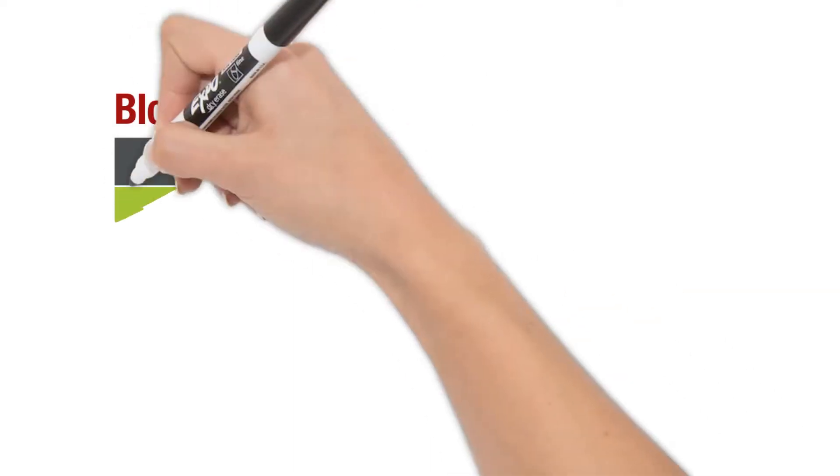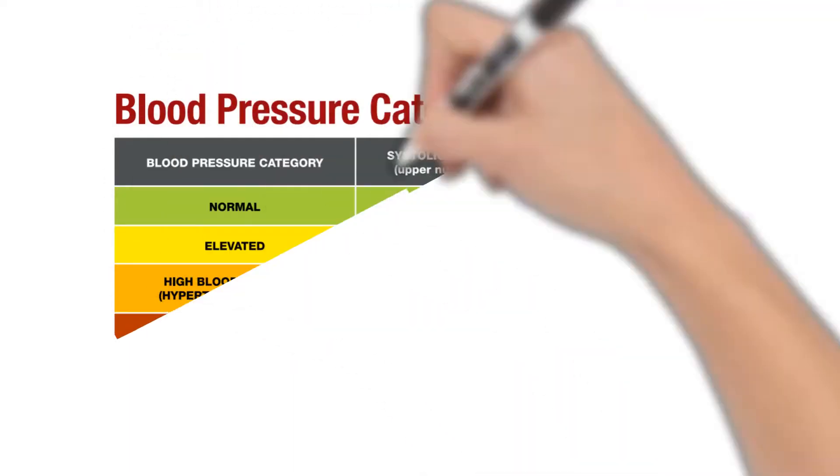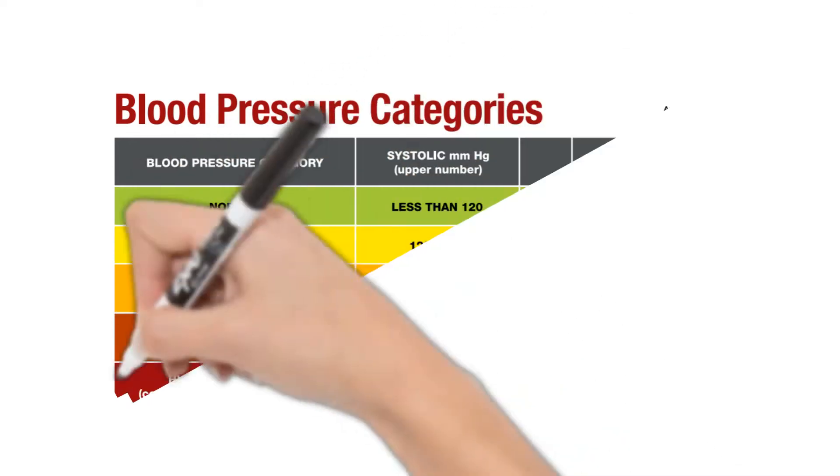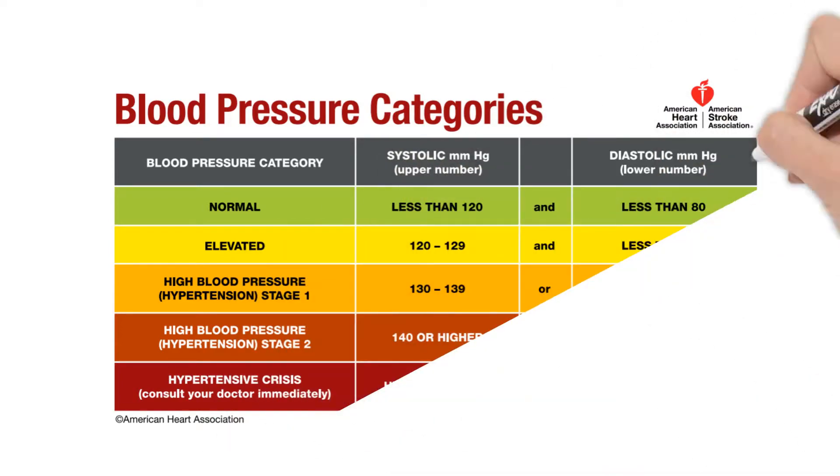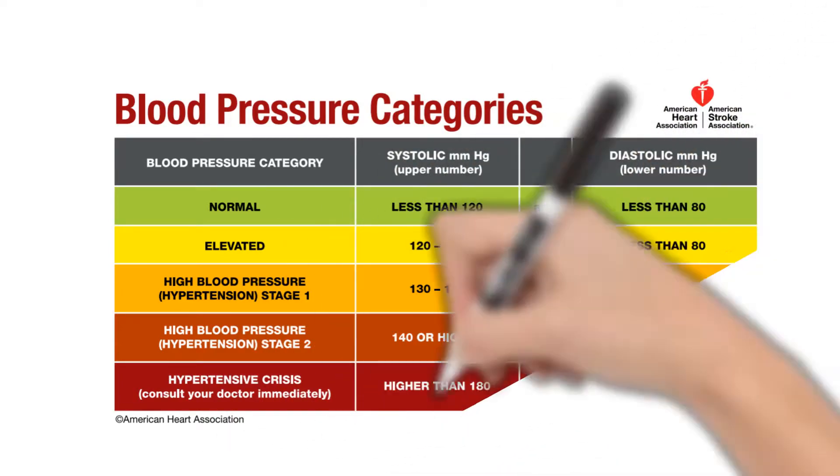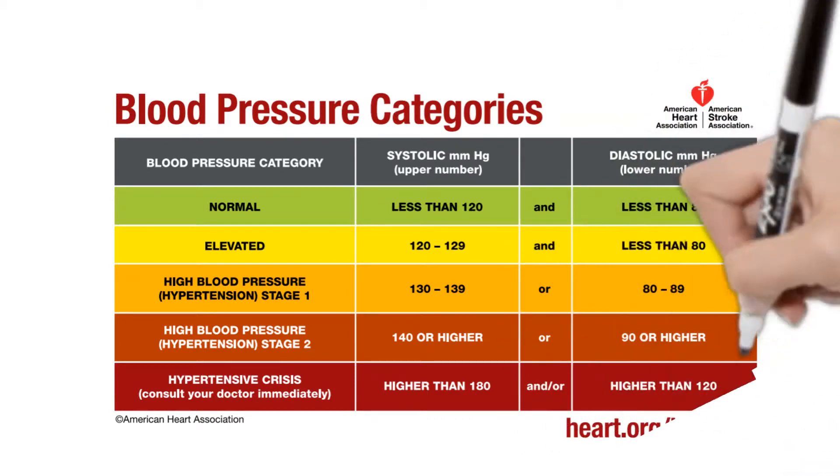What are the stages of high blood pressure? The American Heart Association defines categories of blood pressure as below. When systolic pressure is under 120 mmHg and diastolic pressure under 80 mmHg, that is referred to as normal blood pressure.